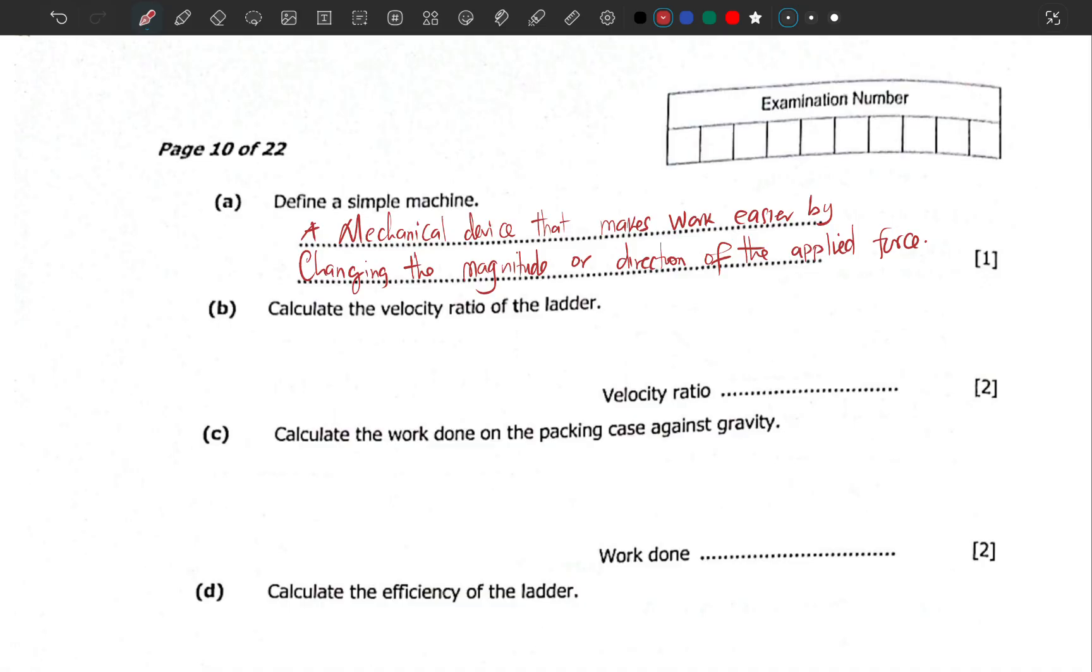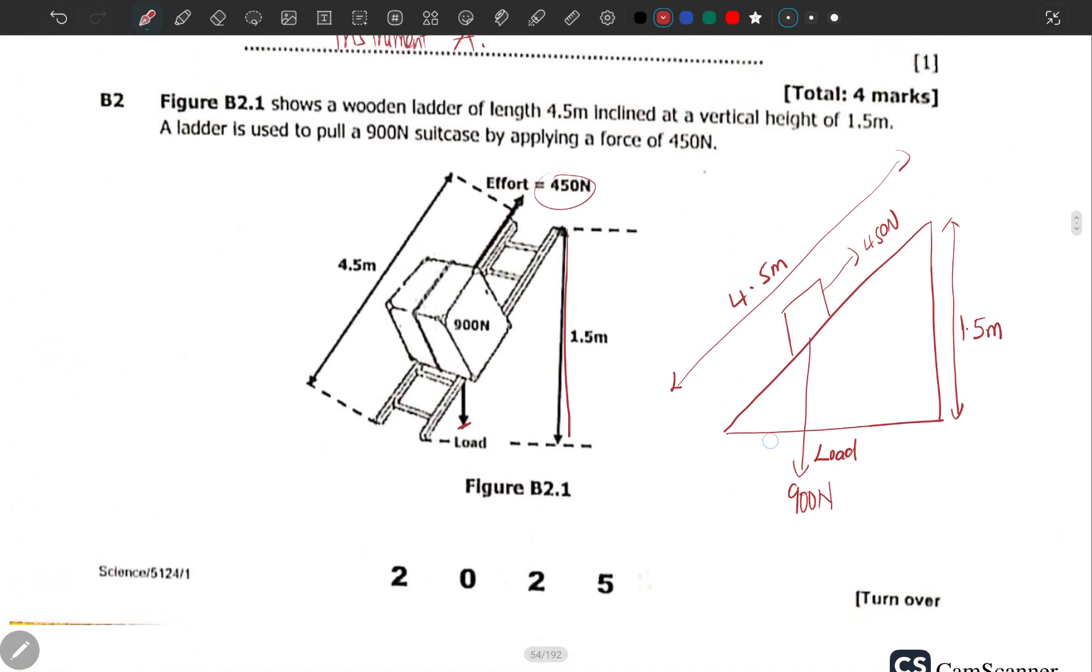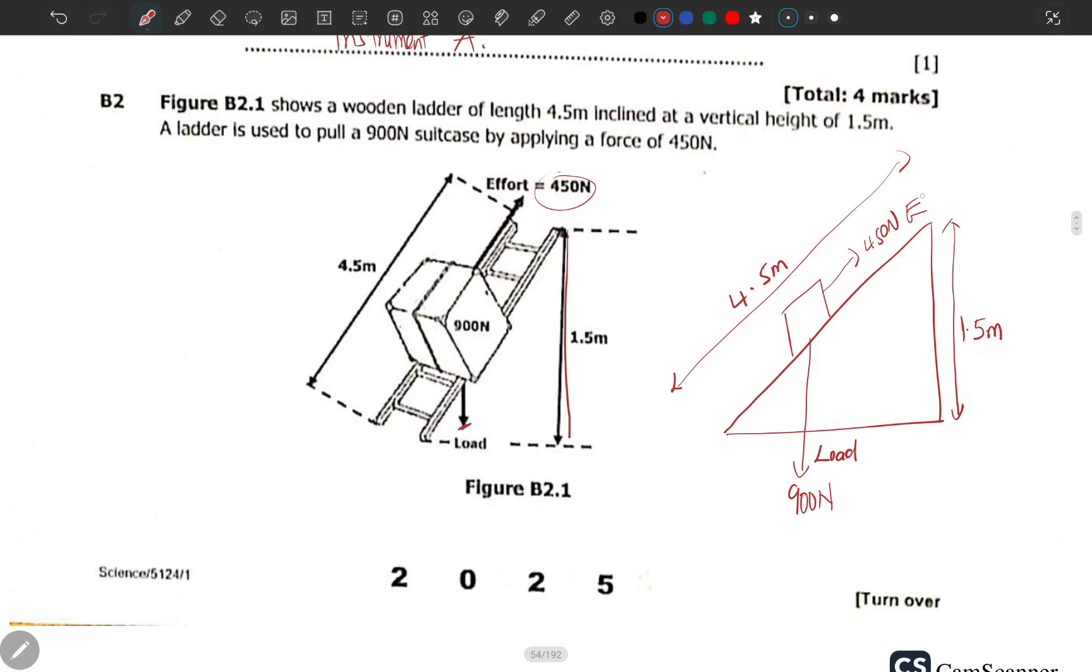Calculate the velocity ratio. Recall that the velocity ratio is just the distance moved by the effort divided by the distance moved by the load. The distance moved by the effort, which one is the distance? We know that this is the effort, right? That's the effort. But is this the distance moved by the effort, or is it this one here? And which one is the distance moved by the load? Because the load is going up.